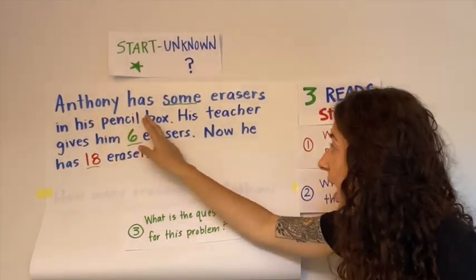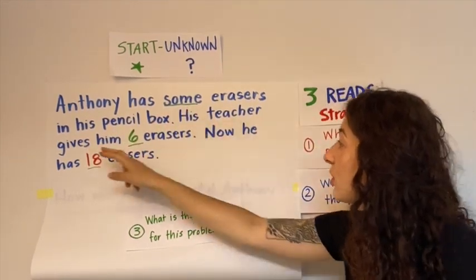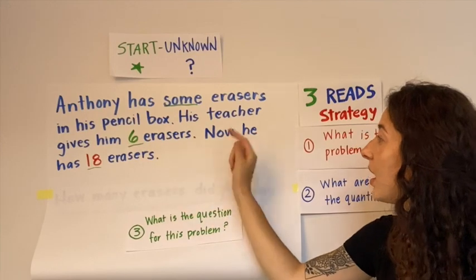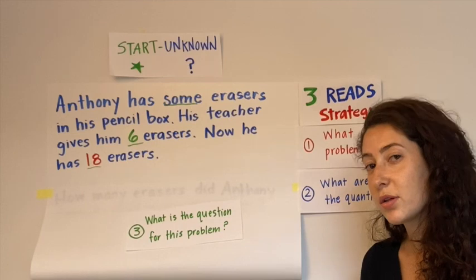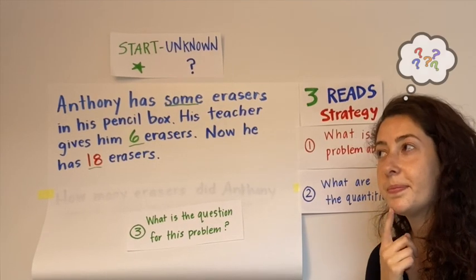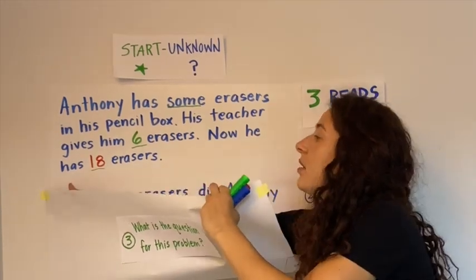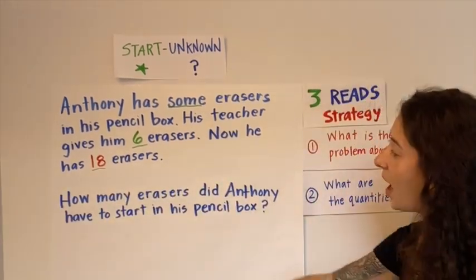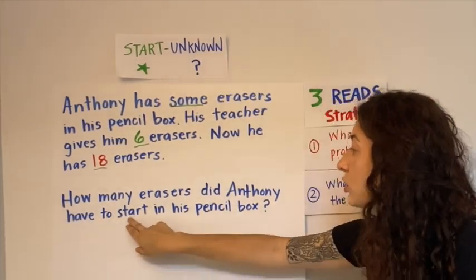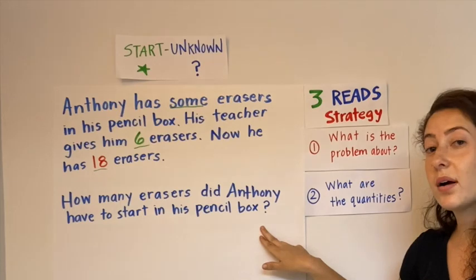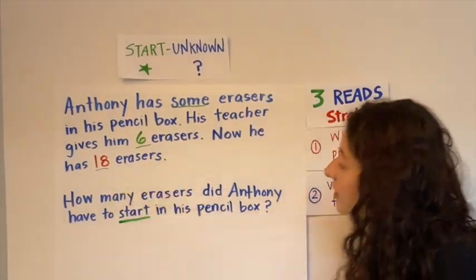So I'm going to read it one more time for our third read and you're going to tell me what is the question for this problem. Ready? Anthony has some erasers in his pencil box. His teacher gives him six erasers. Now he has 18 erasers. What do you think the question is going to be? The question is, how many erasers did Anthony have to start in his pencil box? That is what we are wanting to figure out in this problem.